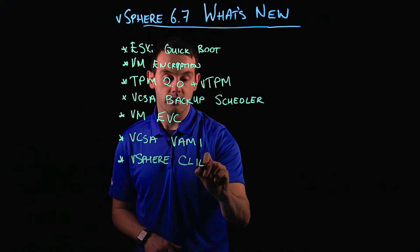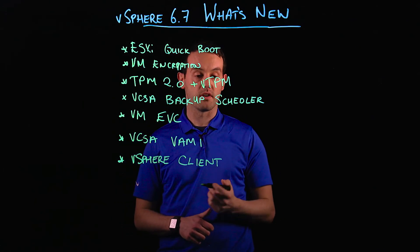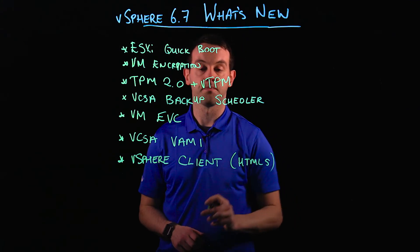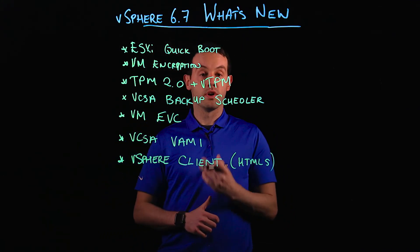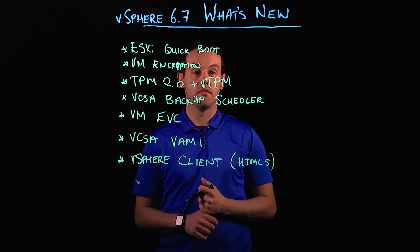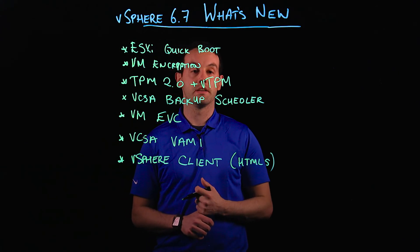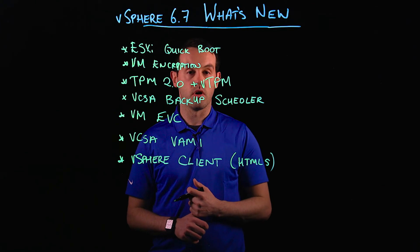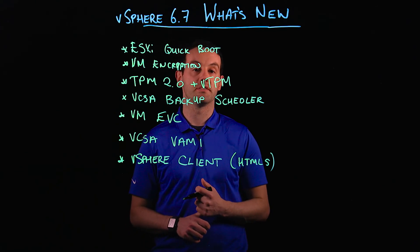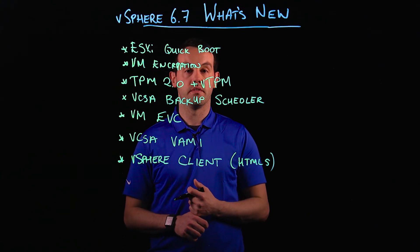Lastly, vCenter 6.7 comes with an improved vSphere client, or what you might know as the HTML5 client. It's not 100% feature parity yet, but the vast majority of your daily workflows will be available in the vSphere client with vSphere 6.7. We're always working to improve and enhance the capabilities of the HTML5 vSphere client for the full deprecation of the vSphere web client.